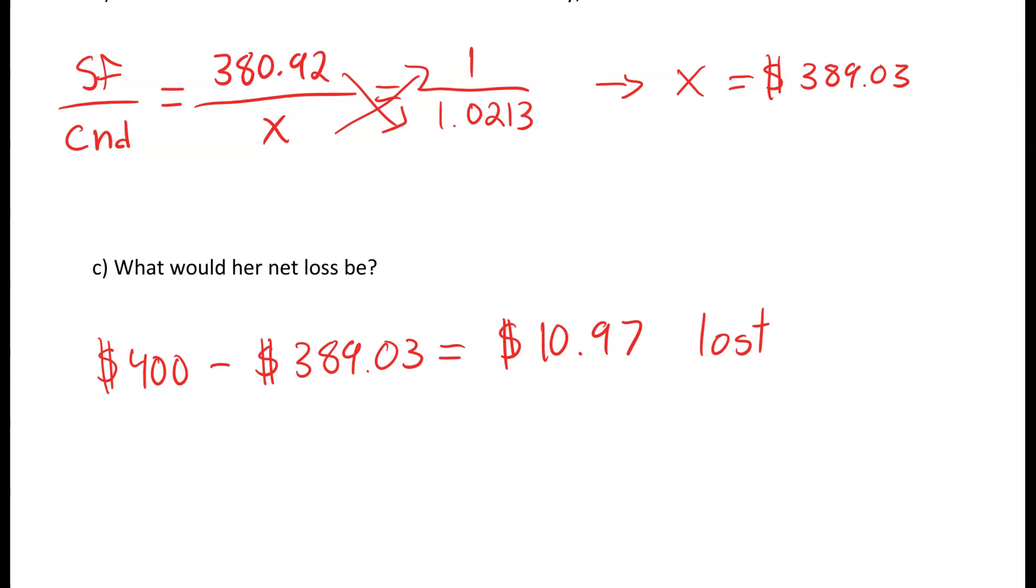Now this isn't a huge dollar amount, but if you are working for a company using large dollar amounts converting back and forth, you can lose a lot of money if you're not paying attention to the conversions. If you're converting too much money and then having to convert it back, with $400 you're losing about $11 just from converting and converting back again. So it's important to pay attention to that while you're traveling or while you're working in business.